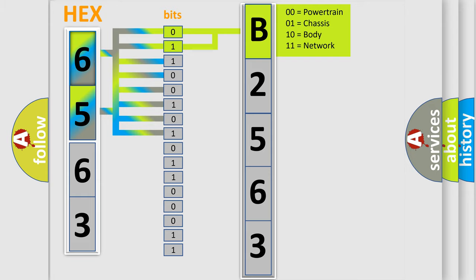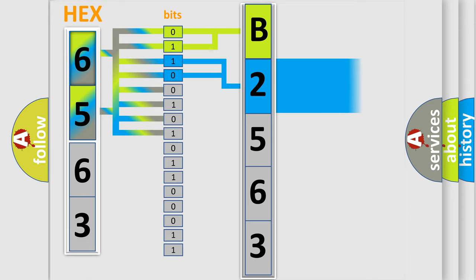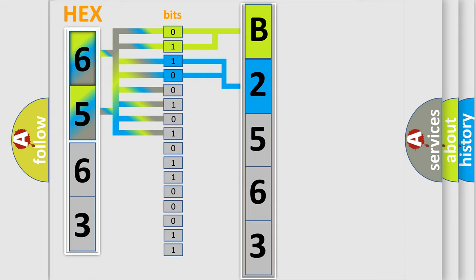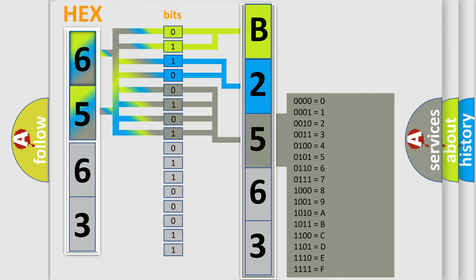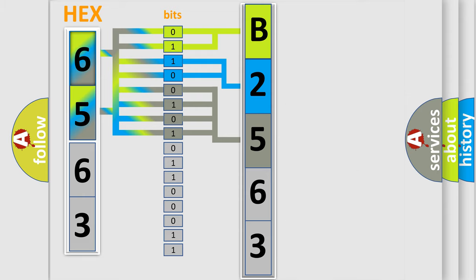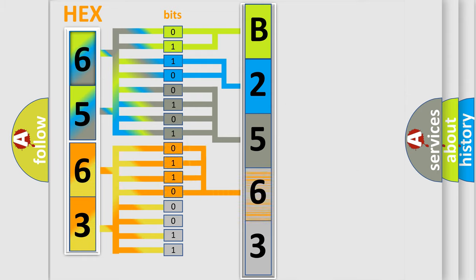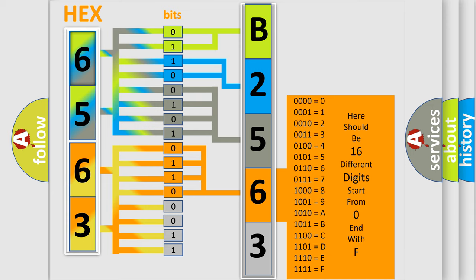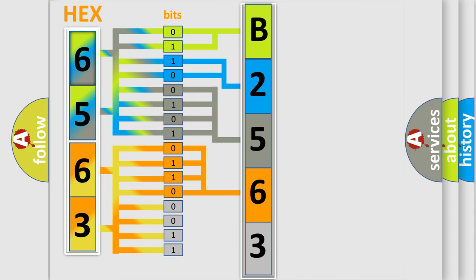By combining the first two bits, the basic character of the error code is expressed. The next two bits determine the second character. The last bit styles of the first byte define the third character of the code. The second byte is composed of a combination of eight bits — the first four bits determine the fourth character, and the last four bits define the fifth character.